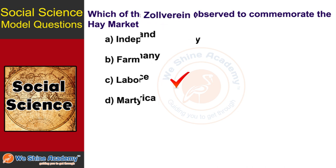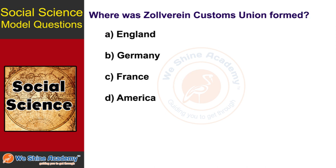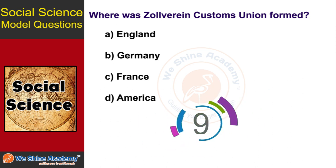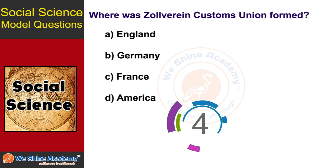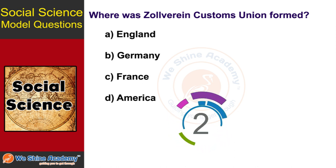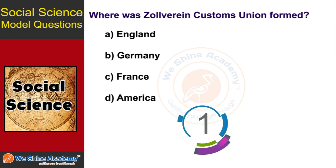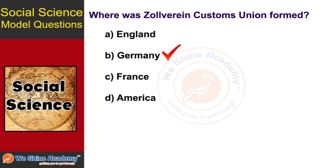The next question is: Where was the Customs Union formed? The answer is Germany.